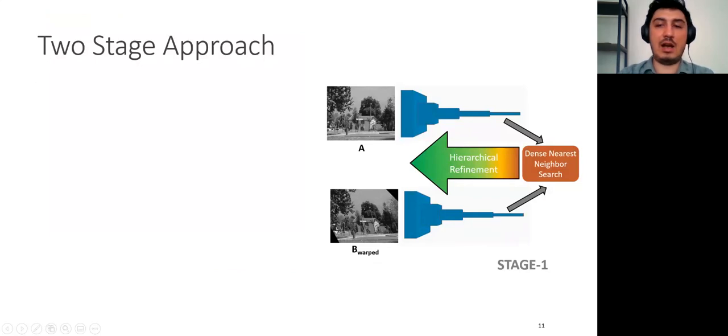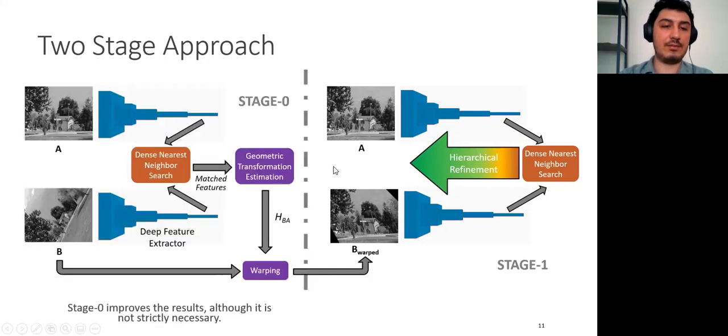Until now, I have talked about dense nearest neighbor search and hierarchical refinement, which we have named this structure as stage 1. Also, we have realized that although stage 1 successfully works for many image pairs, it suffers under extreme viewpoint changes, more specifically under significant inline rotations. Therefore, we have added a preliminary step, namely stage 0.